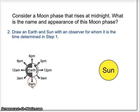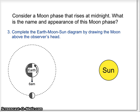Next thing I need to do is add a moon to this diagram. So step three, I'm going to complete my earth, moon, sun diagram by drawing the moon directly above the observer's head. We just identified our 6 a.m. observer as the person down here.